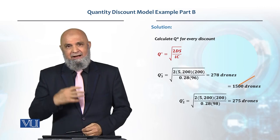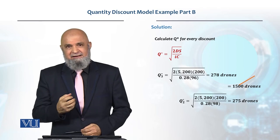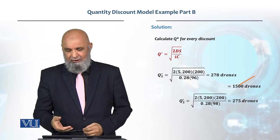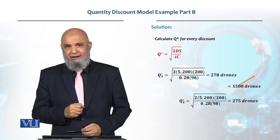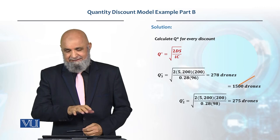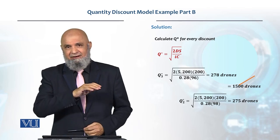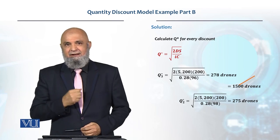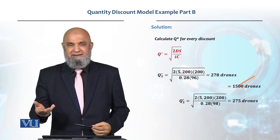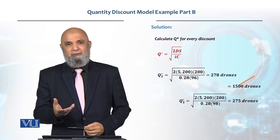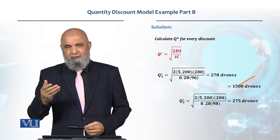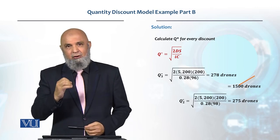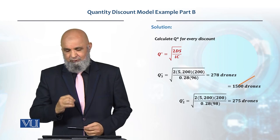Since 275 is the optimum quantity for this price, it is feasible. There is no need to calculate for the higher price level, because that price is higher and the optimum quantity already falls here. At the higher price, the product cost will be higher, so the total cost will be more than this. So we do not need to go there.